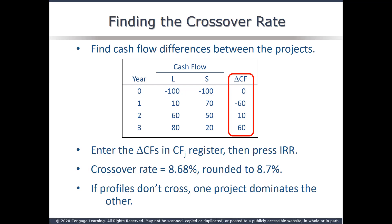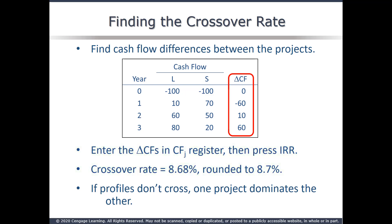To find the crossover rate, we use the change in cash flow column. In this example, we subtracted S's cash flows from L's, but it doesn't matter which way you subtract. Enter these cash flows in the CF worksheet and solve for internal rate of return — the result is the crossover rate. If an error displays, the profiles don't cross, so there will be no conflict.